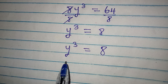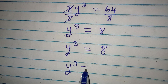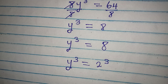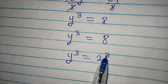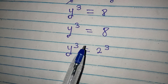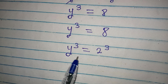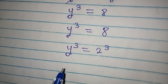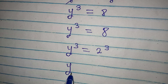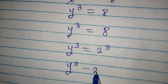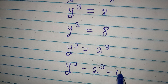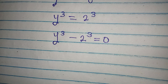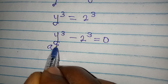From here, we have y³ = 8. I want to break it down further: y³ = 2³. Since the powers are the same, we could equate the bases, but that gives only one solution. We need the complete three solutions, so we set y³ - 2³ = 0, bringing everything to the left-hand side.